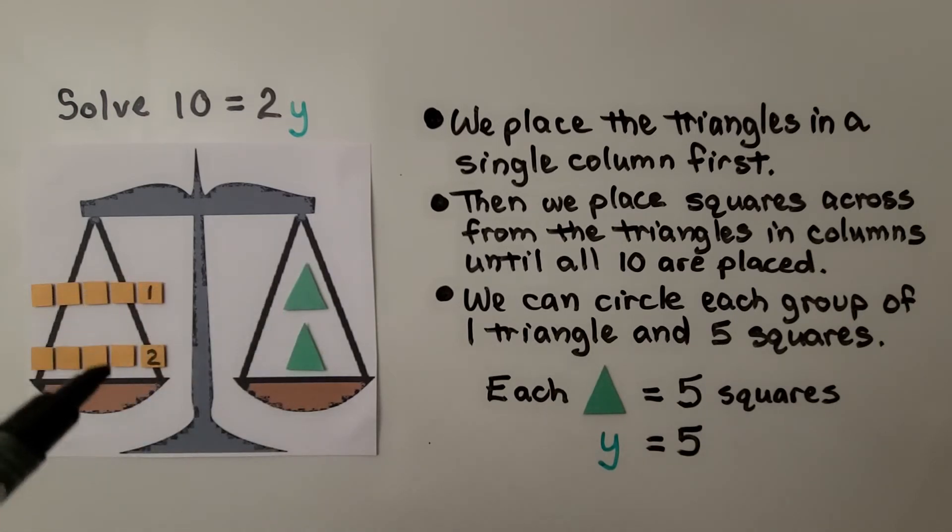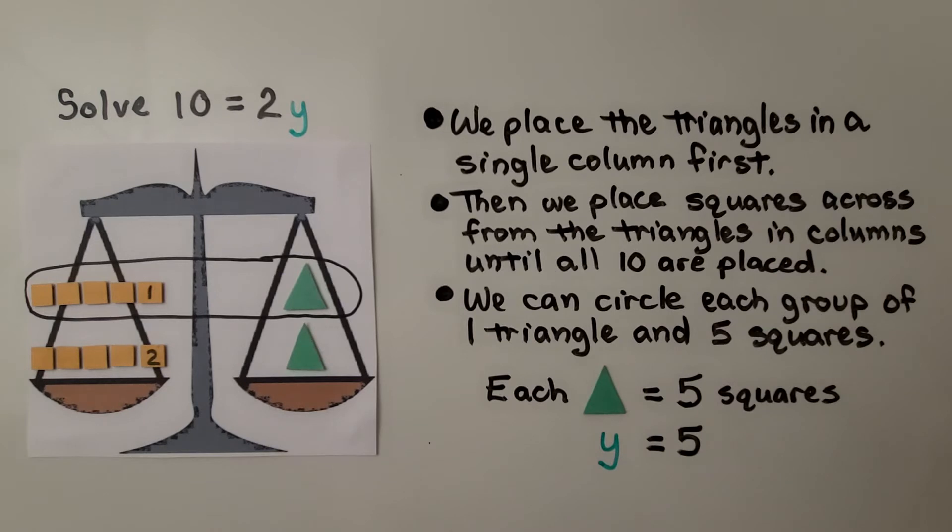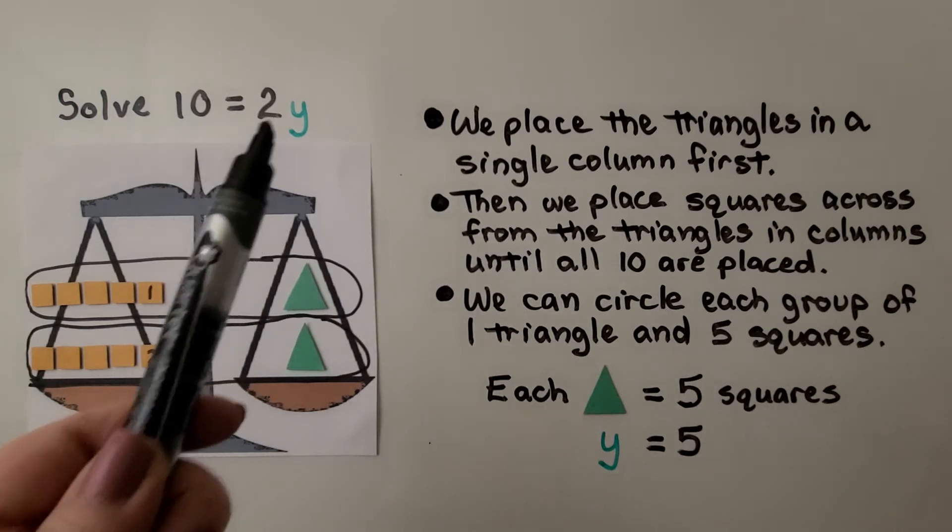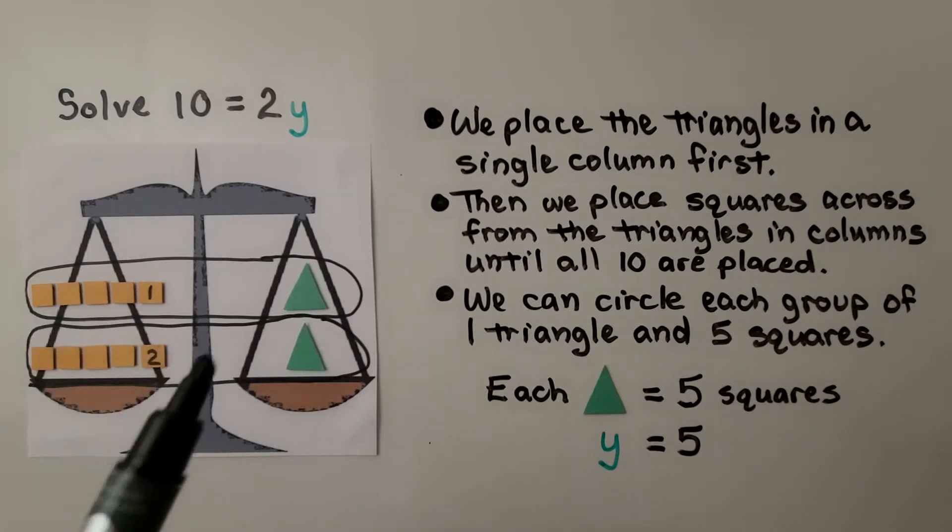So we go one through ten counting them out. And we can circle each group of one triangle and five squares. That's one group. That's two groups for 2y. Each triangle is equal to five squares. y is equal to five.